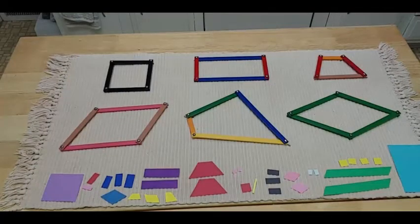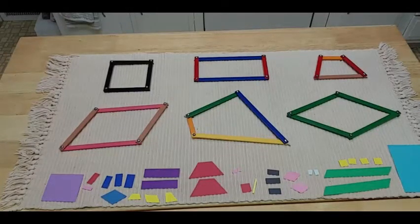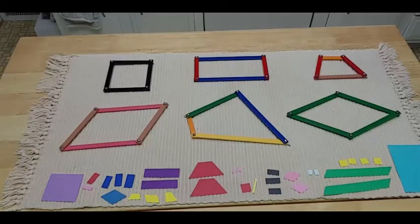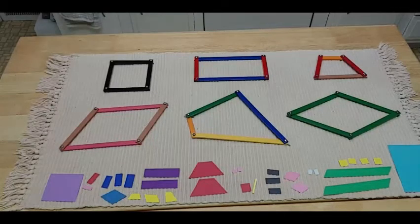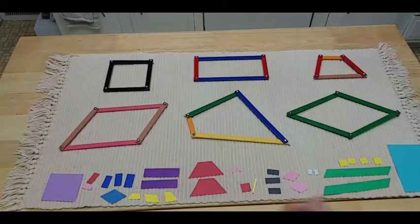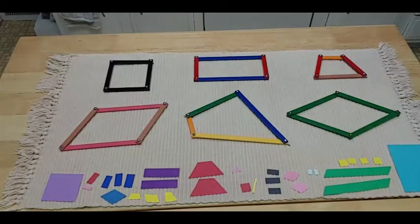Okay, now that I have my shapes set up, let's do a little review before we get started with our fun activity today. Now remember, a quadrilateral is a polygon with four sides and four angles. So you'll see here that all of my shapes have four sides. One, two, three, four, and four angles.